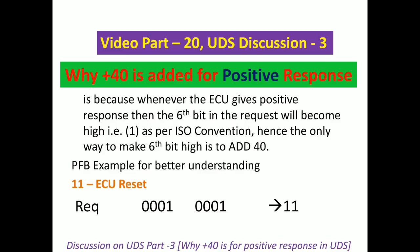In UDS, all these services only have the first digit changed because it is added by 0x40. The second digit is 0, so it remains as is. I have marked bits 0 through 7 for your reference so you can identify which bit is the 6th bit. In the positive response, the 6th bit is 1. For 0x51: binary of 5 is 0101, so the 6th bit has changed to high — that is why 0x40 has been added.